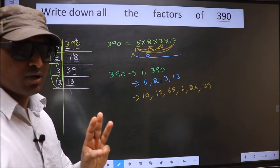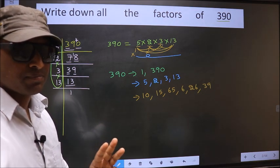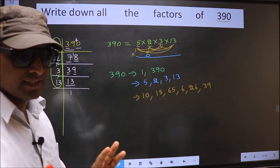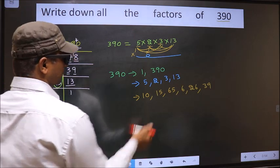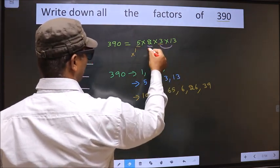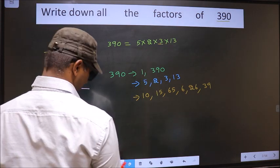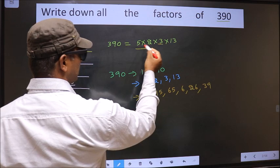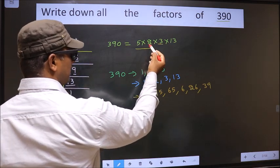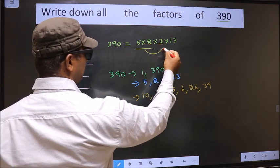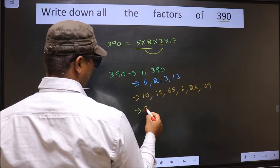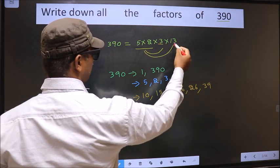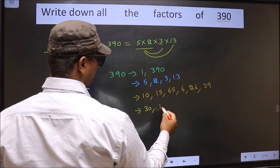Next. Now we should take the combination of 3 numbers. How do we take? First, I fix these 2 numbers. That is 5 into 2, 10. Combine with 3, 10 into 3, 30. Now I combine with 13. 10 into 13, 130.